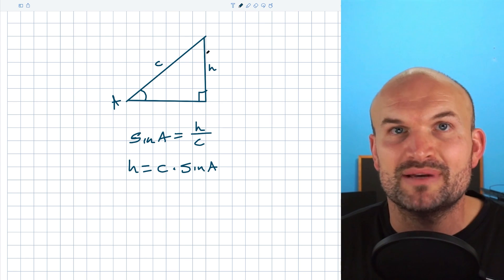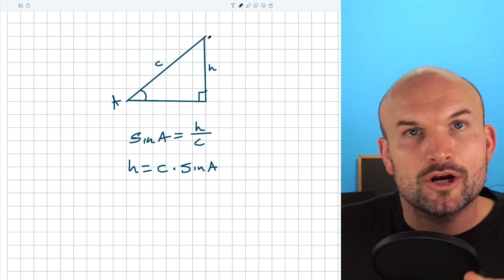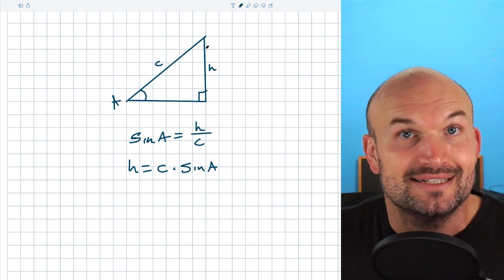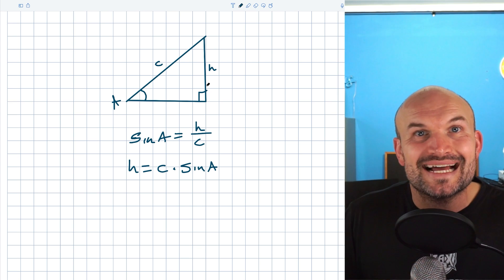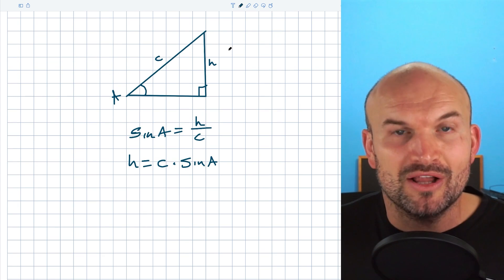Now when we're talking about the ambiguous case, more often than not, we're not talking about a right triangle. We're talking about an oblique triangle. And an oblique triangle is basically a triangle that is a non-right triangle. This third side is not going to be perfectly perpendicular to this base. It could actually be bigger or smaller.